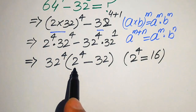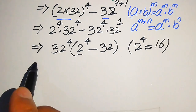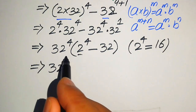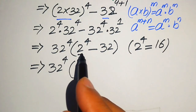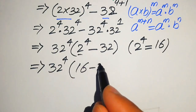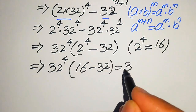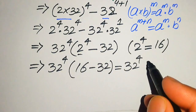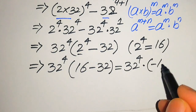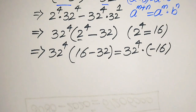Now we clearly see that 2 to the power of 4 equals 16. So we replace 2 to the power of 4 with 16, and the expression becomes 32 to the power of 4 multiplied by 16 minus 32. And 16 minus 32 equals minus 16, so we write it as 32 to the power of 4 into minus 16.